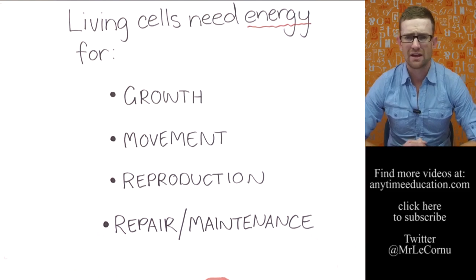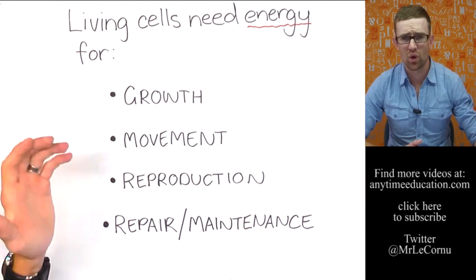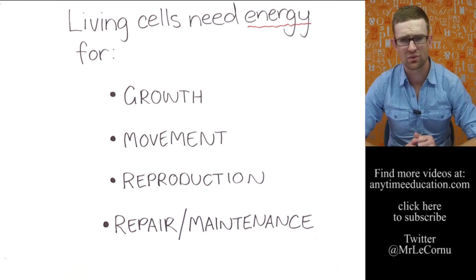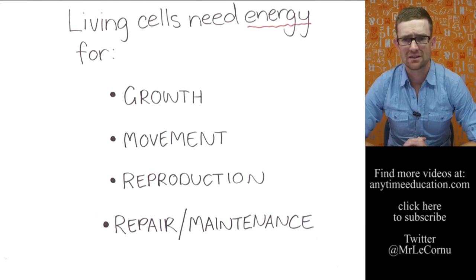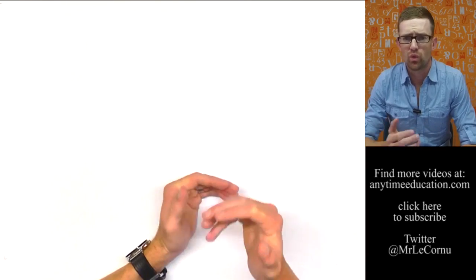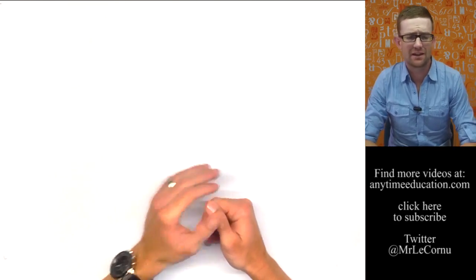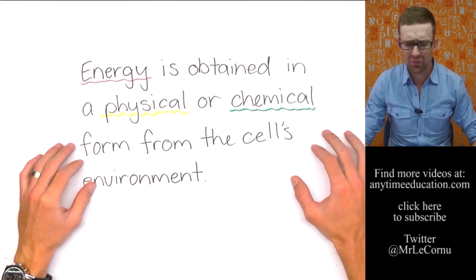And that's why energy is so essential for living things. Because after all, all living things are made of cells, and cells need energy for those four key things. So hopefully that answers the question for you on why living things need energy. The next part is to think about where the energy comes from.